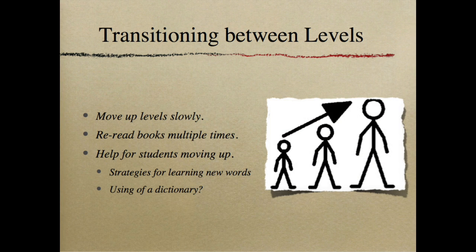How do we transition between levels? We want to move up slowly — read about 10 books in a level and then move up. We also want to reread books multiple times; it might seem counterintuitive, but it's scientifically proven to help. As teachers, we can help you move up levels. Can we use a dictionary? Yes, you can use one when transitioning between levels, but when you're reading at a specific level and have been there a while, don't use a dictionary — it's declarative knowledge, not procedural.